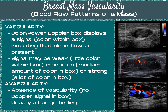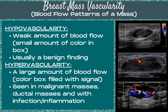Avascularity is usually a benign finding. Hypovascularity is our next type of breast mass vascularity. This is where there's a weak amount of blood flow — a small amount of color Doppler signal in the Doppler box — and this is usually a benign finding.